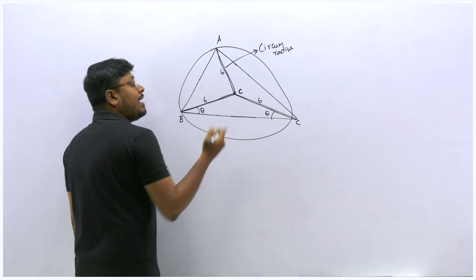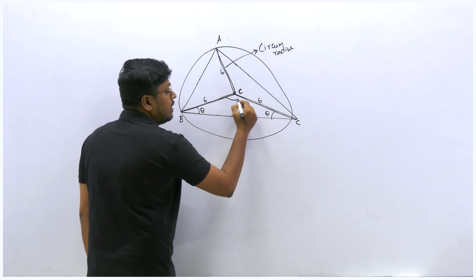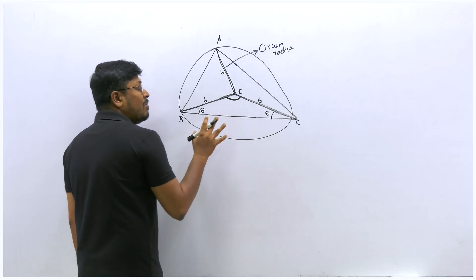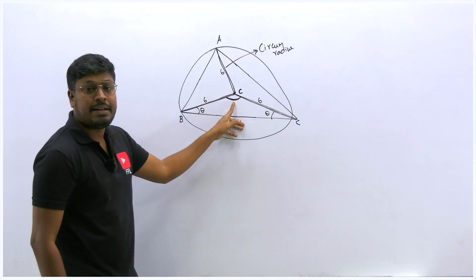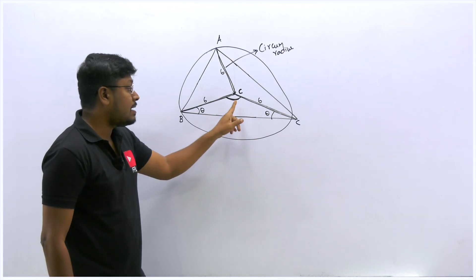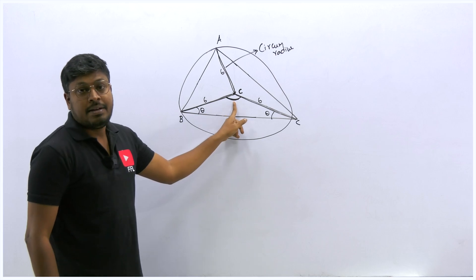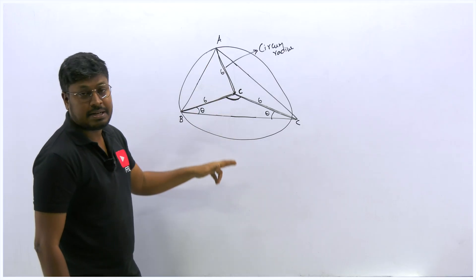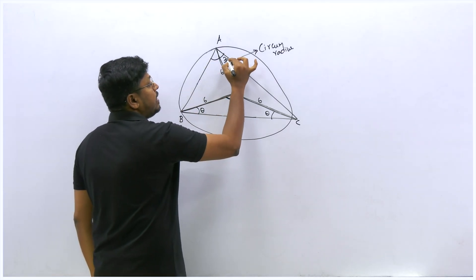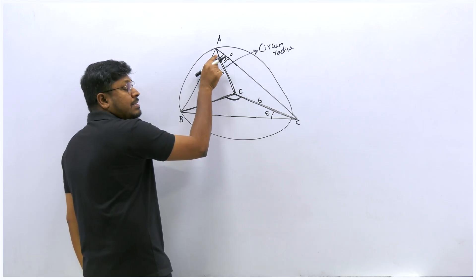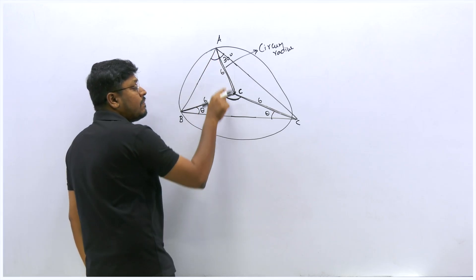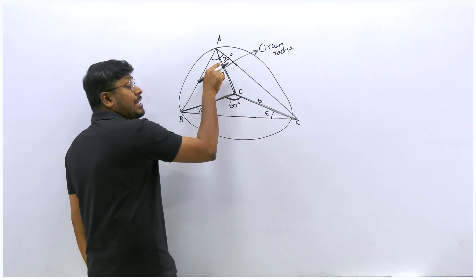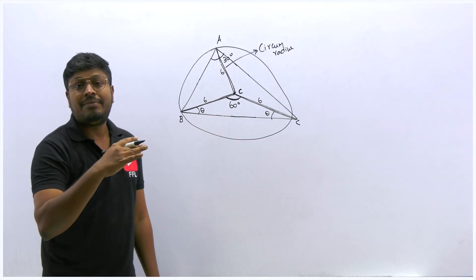Now, to find the circumcenter angle: there is no formula like the incenter. Whatever angle is opposite to the circumcenter, the circumcenter angle is simply twice that angle. For example, if angle A is 30°, the circumcenter angle is 60°; if the opposite angle is 70°, the circumcenter angle is 140°. That's it—no formula needed.